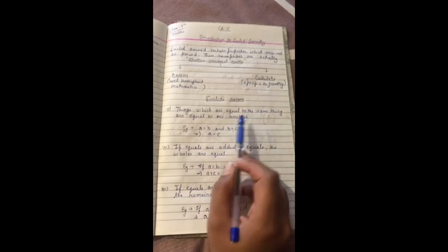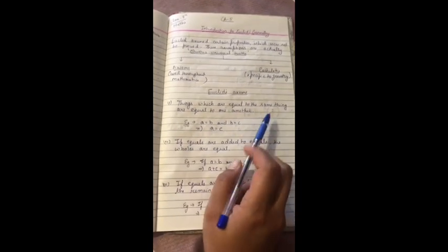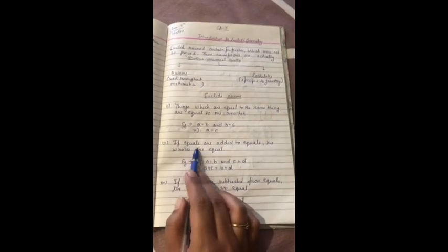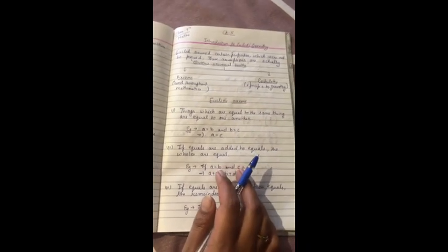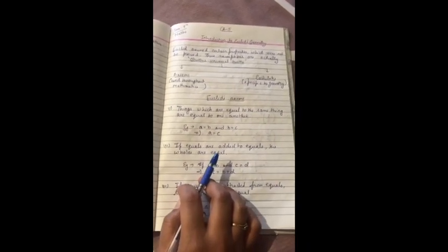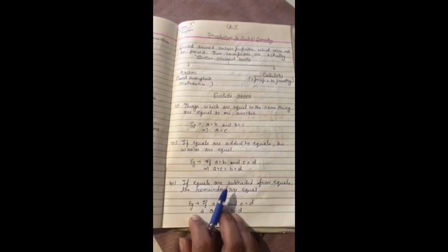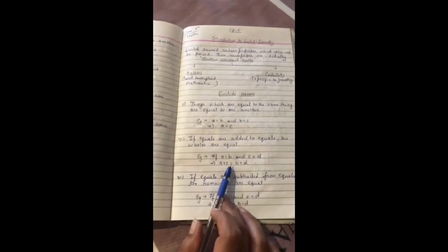Things which are equal to the same things are equal to one another. Next: if equals are added to equals, when we add two equal things to equal things, then the whole is equal. The whole is equal.